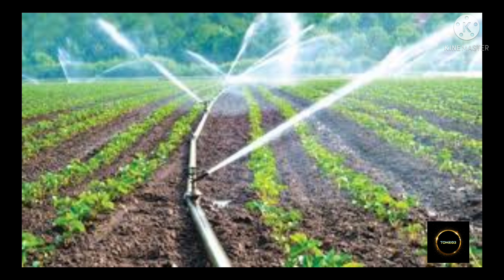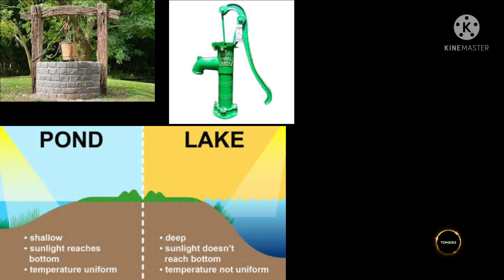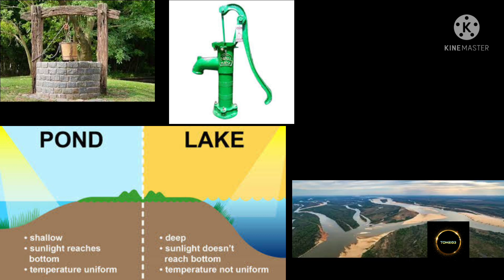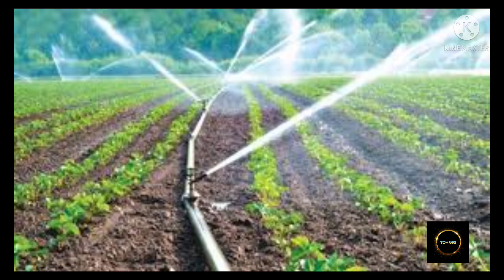Sources of irrigation: The sources of irrigation are wells, tube wells, ponds, lakes, rivers, dams and canals. Traditional method of irrigation: The water available in wells, lakes and canals is lifted up by different methods in different regions for taking it to the fields. Cattle or human labor is used in these methods.